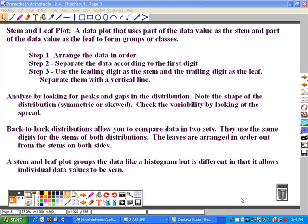From this, then, we can analyze peaks and gaps in the distribution and get a better understanding of what's taking place with our data. You also can describe this like you would a histogram using the idea of symmetry or skewness. You can compare two different data sets if they're similar to one another in some characteristic, and you want to compare the two sets using what we call back-to-back stem and leaf plots.